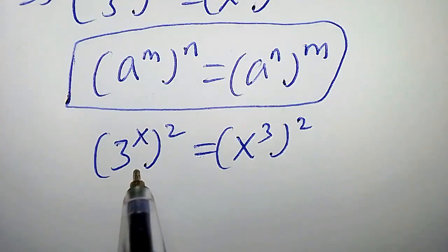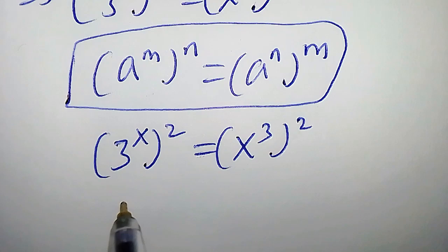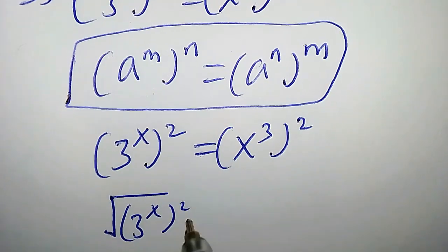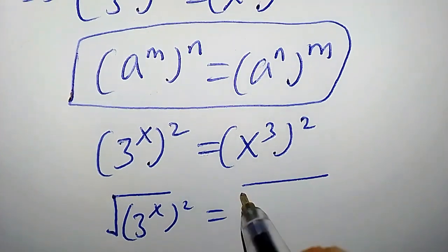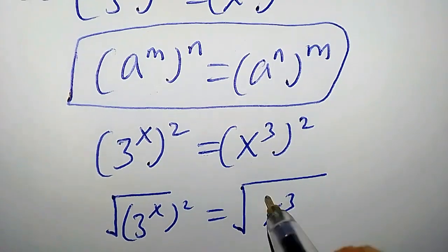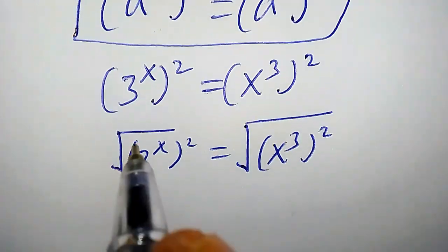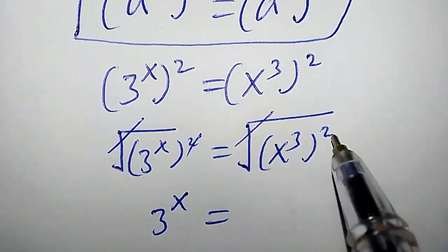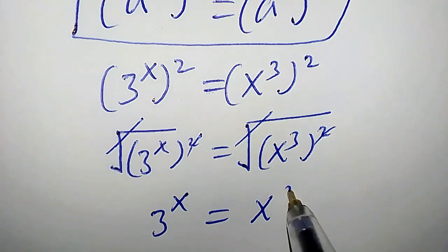Now let's take the positive square root of both sides. We're going to have square root of 3 to the power of x times 2 equals square root of x to the power of 3 times 2. Clearly, these cancel each other. We are left with 3 to the power of x equals x to the power of 3.